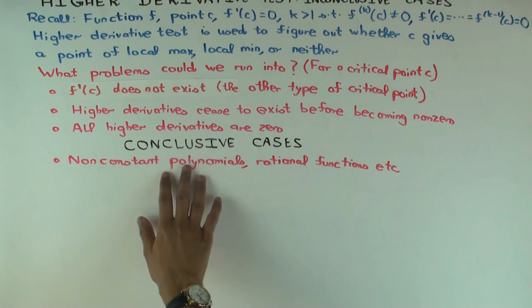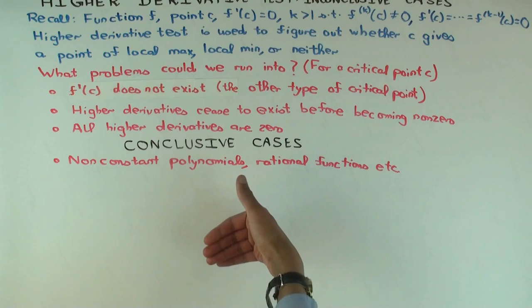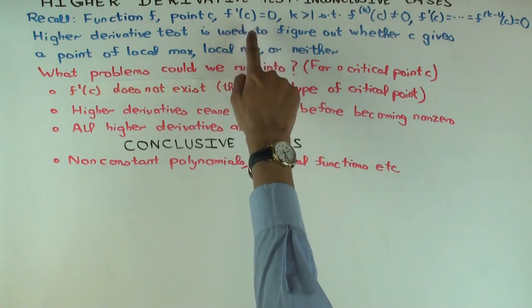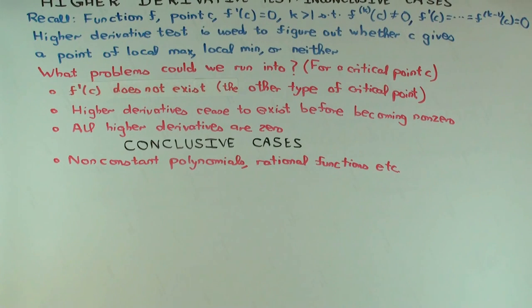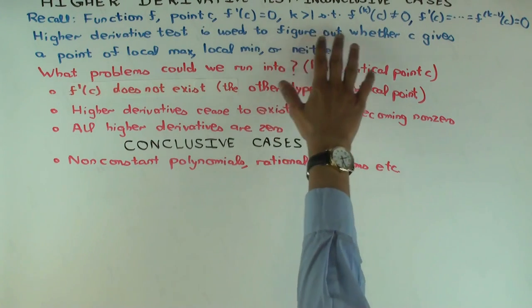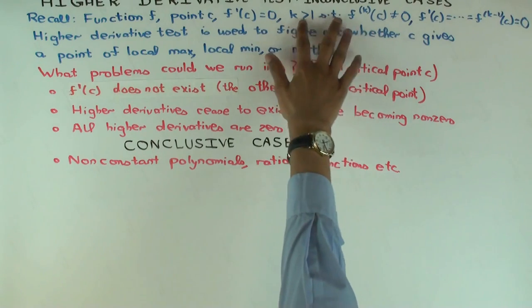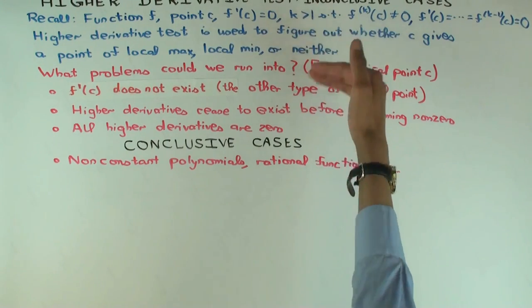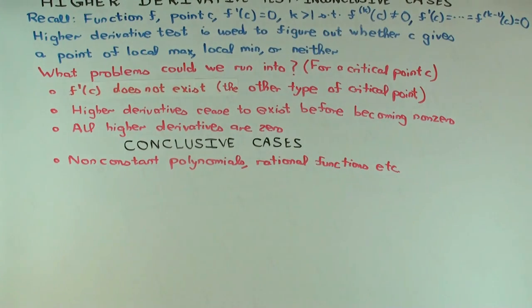And that's why I assume non-constant polynomials. If there's a non-constant polynomial, some degree, say 5, then the fifth derivative is a non-zero constant function, which means that at the point c, it's non-zero. So if you have a polynomial of degree 5, then what can you say about the k? It's at most 5, right? But in particular, there's some point at which the derivative will become constant. So that's good.